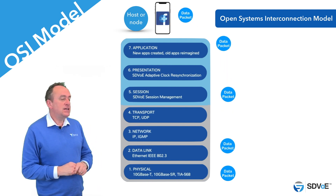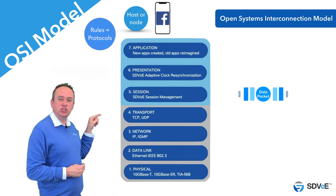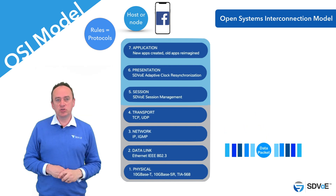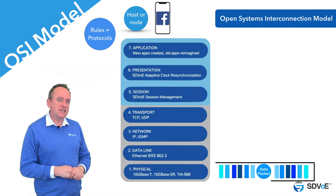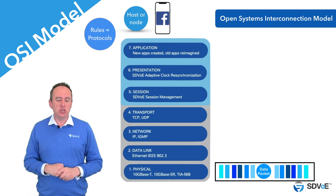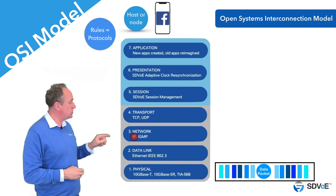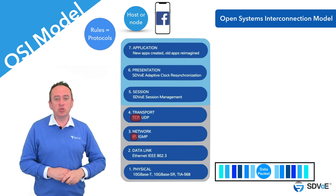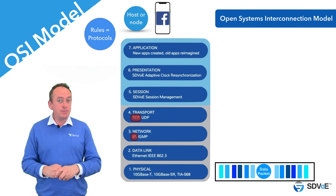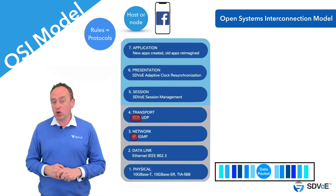In networking, these rules are called protocols, and each layer will assign certain protocols as it moves down from seven through to one. These protocols are placed into headers which are attached to the outside of the packet at each layer. You may already be familiar with some of the more common protocols used, such as Internet Protocol or Transmission Control Protocol. Look out for our other courses which take a deeper dive into the protocols used when distributing AV across a network.